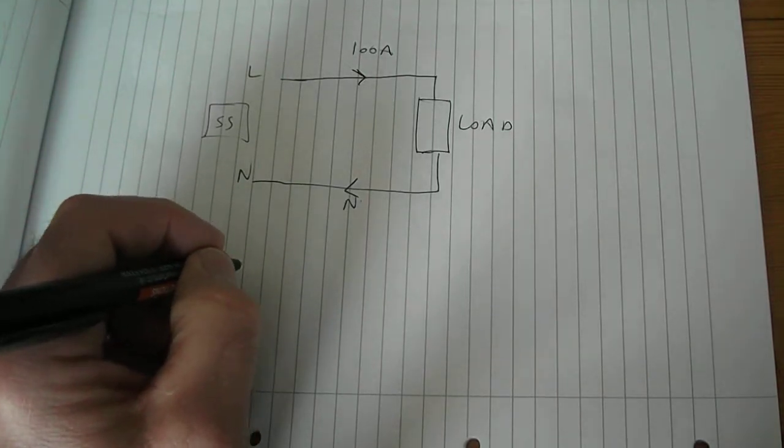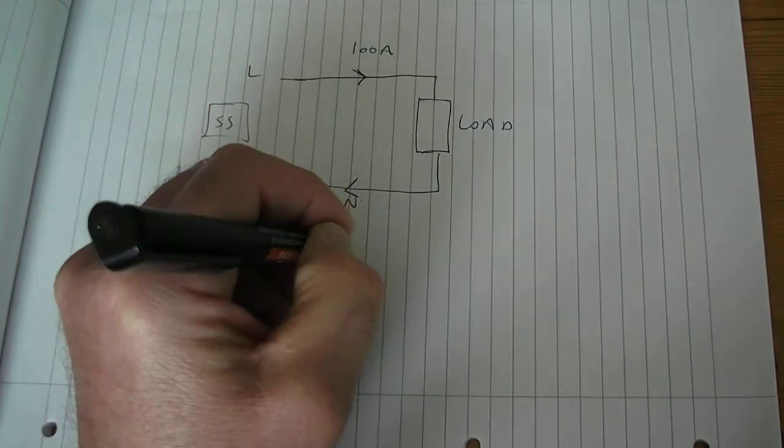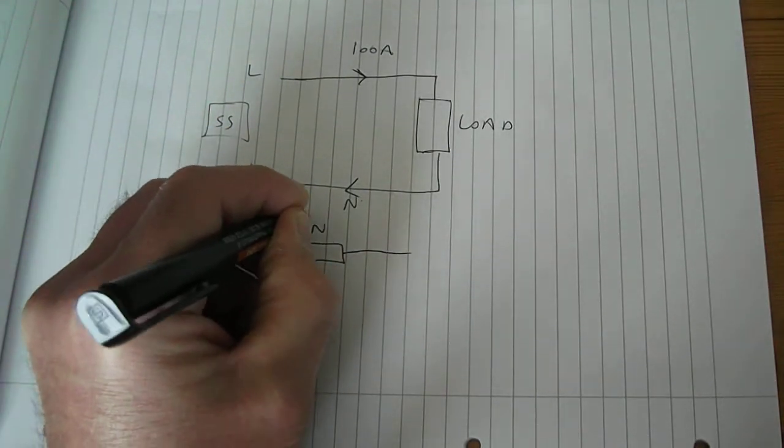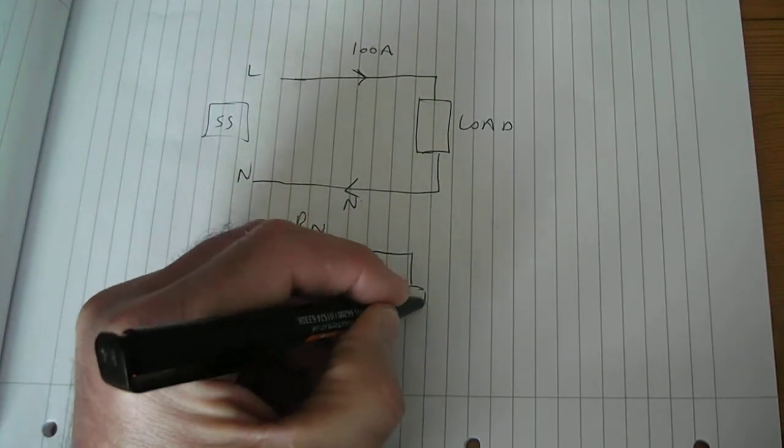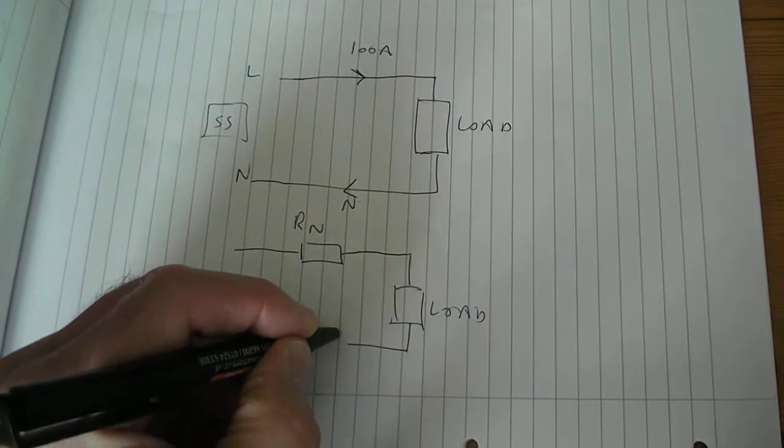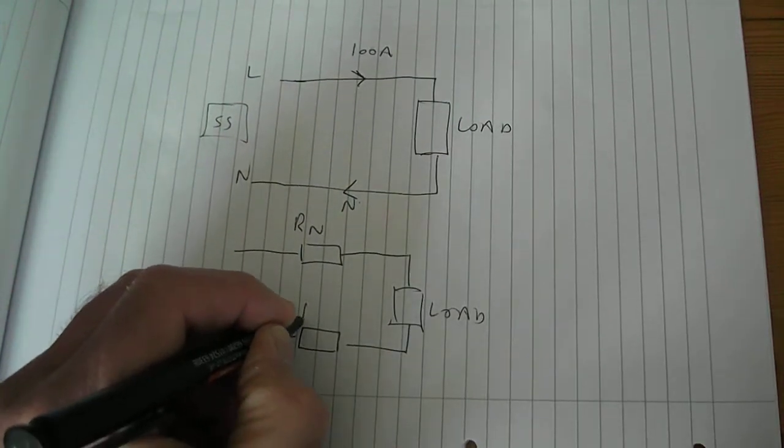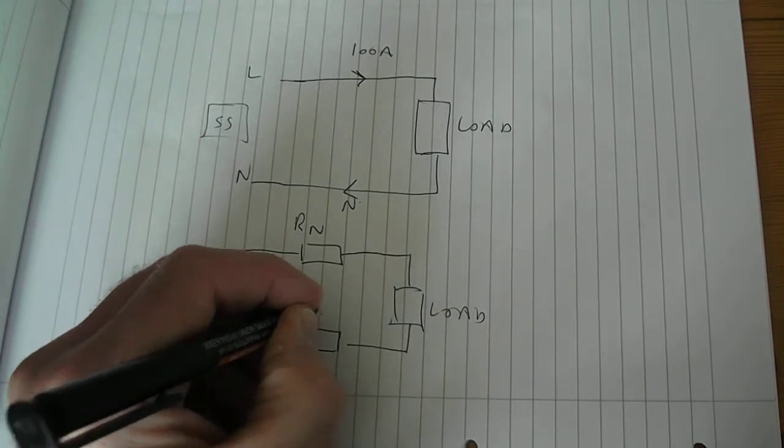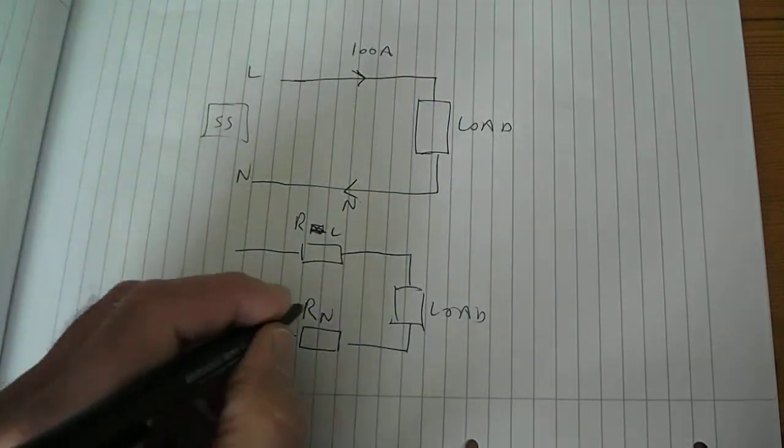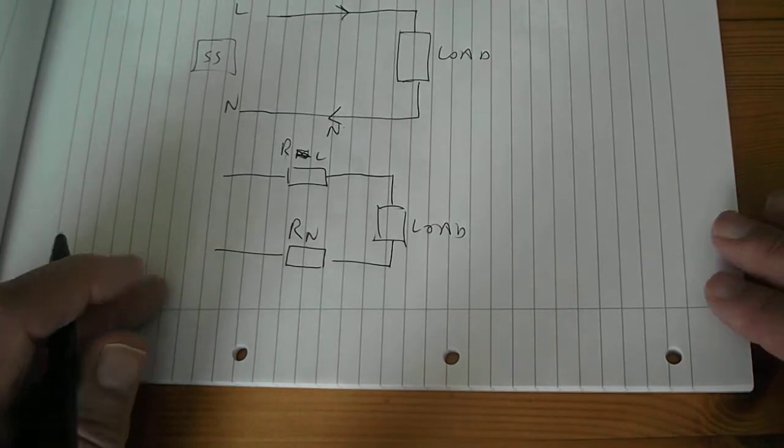Right, so we have effectively a resistor here which represents the resistance of the neutral cable. I'll call that RN. There's our load, and we have, this is the resistance of our neutral, sorry that should be live, RL and RN. And effectively there we've got three resistors in series.